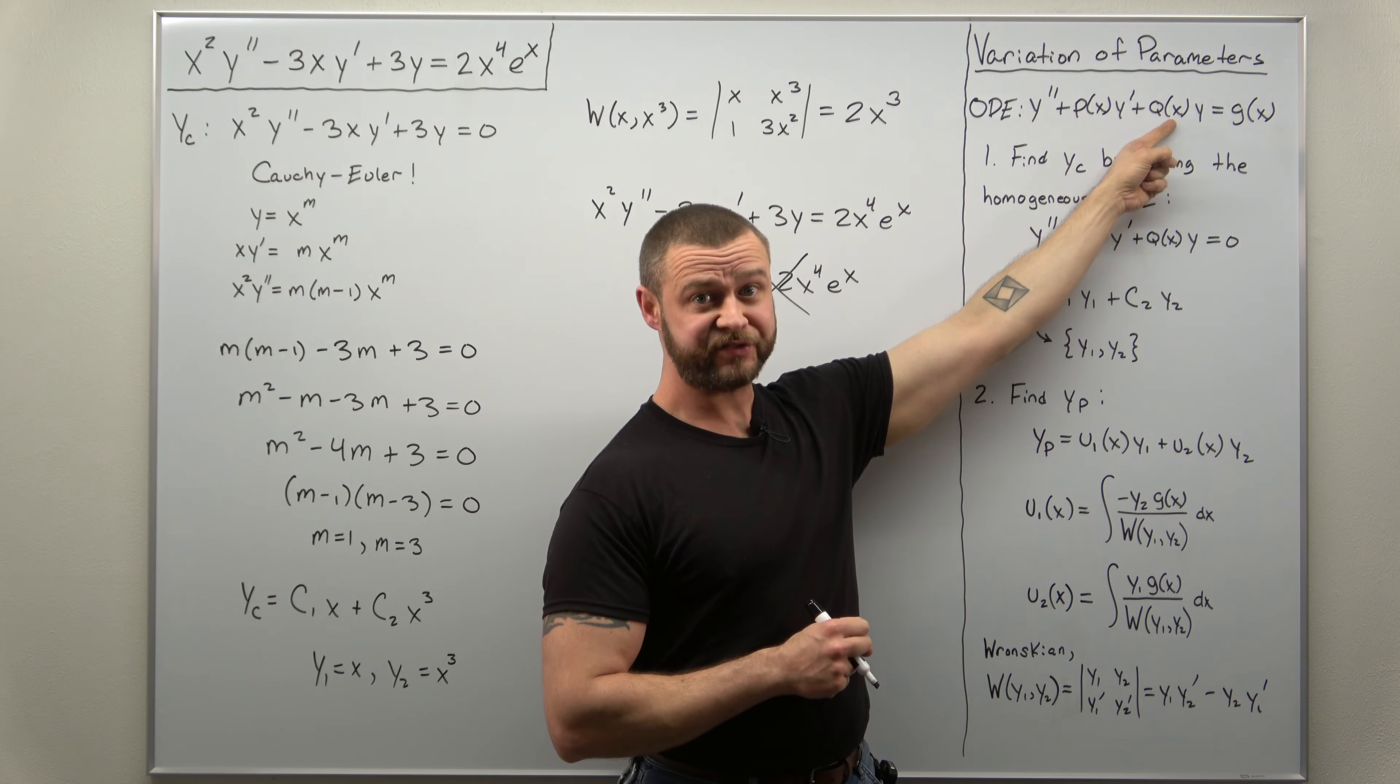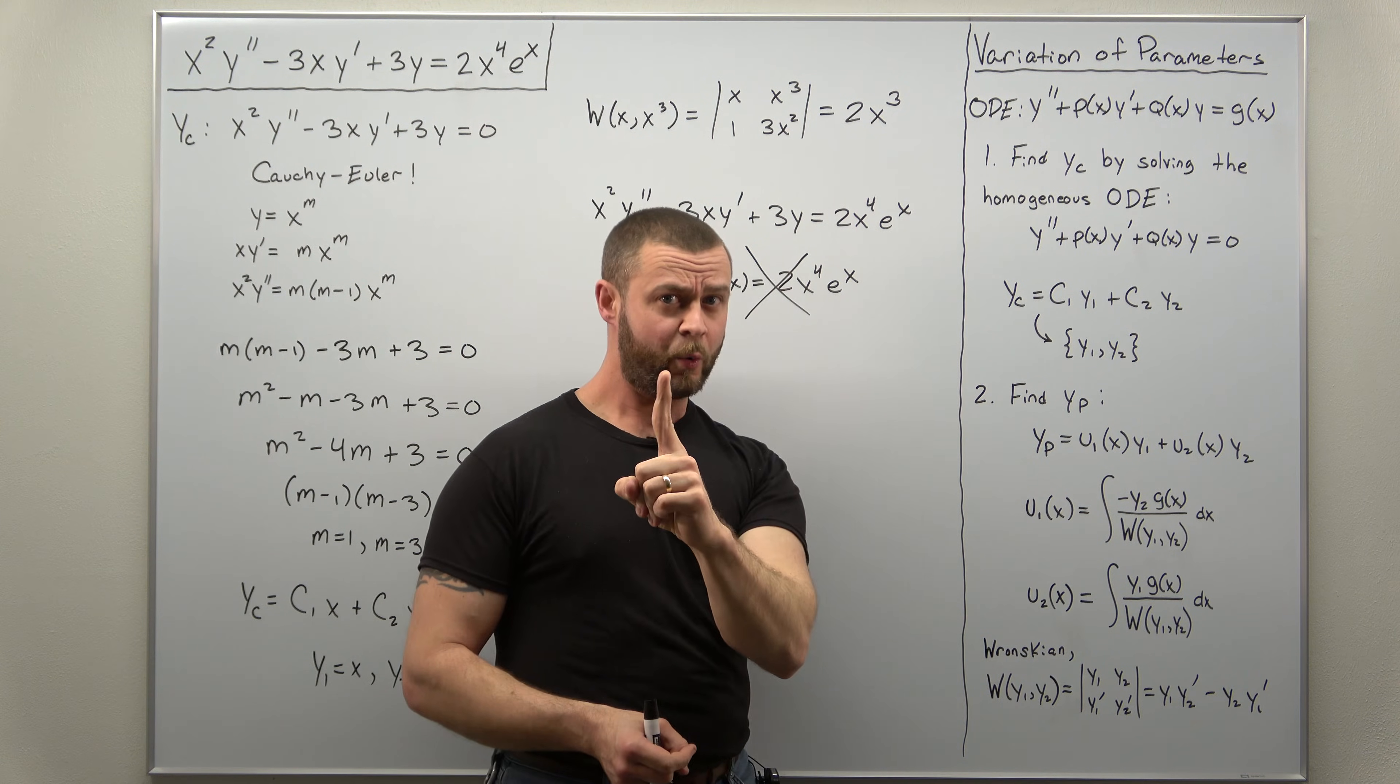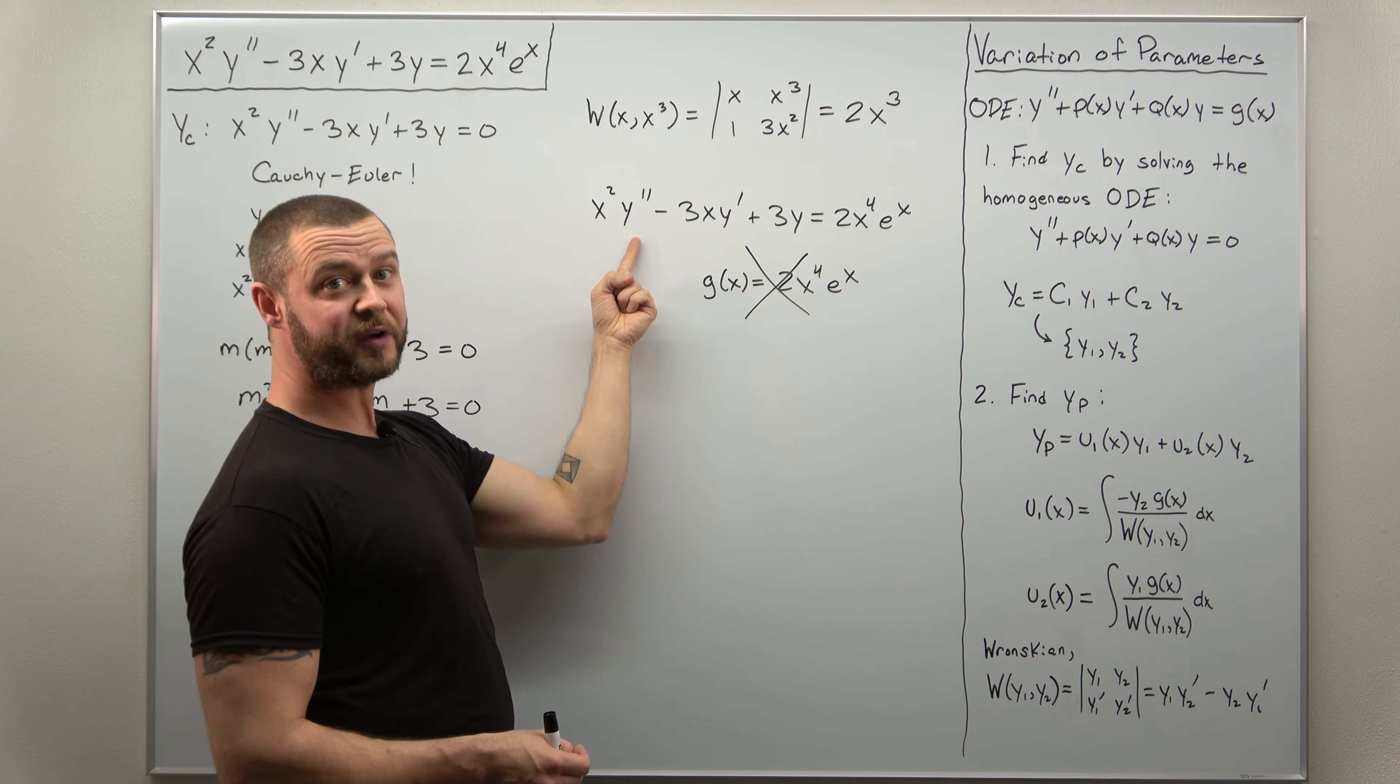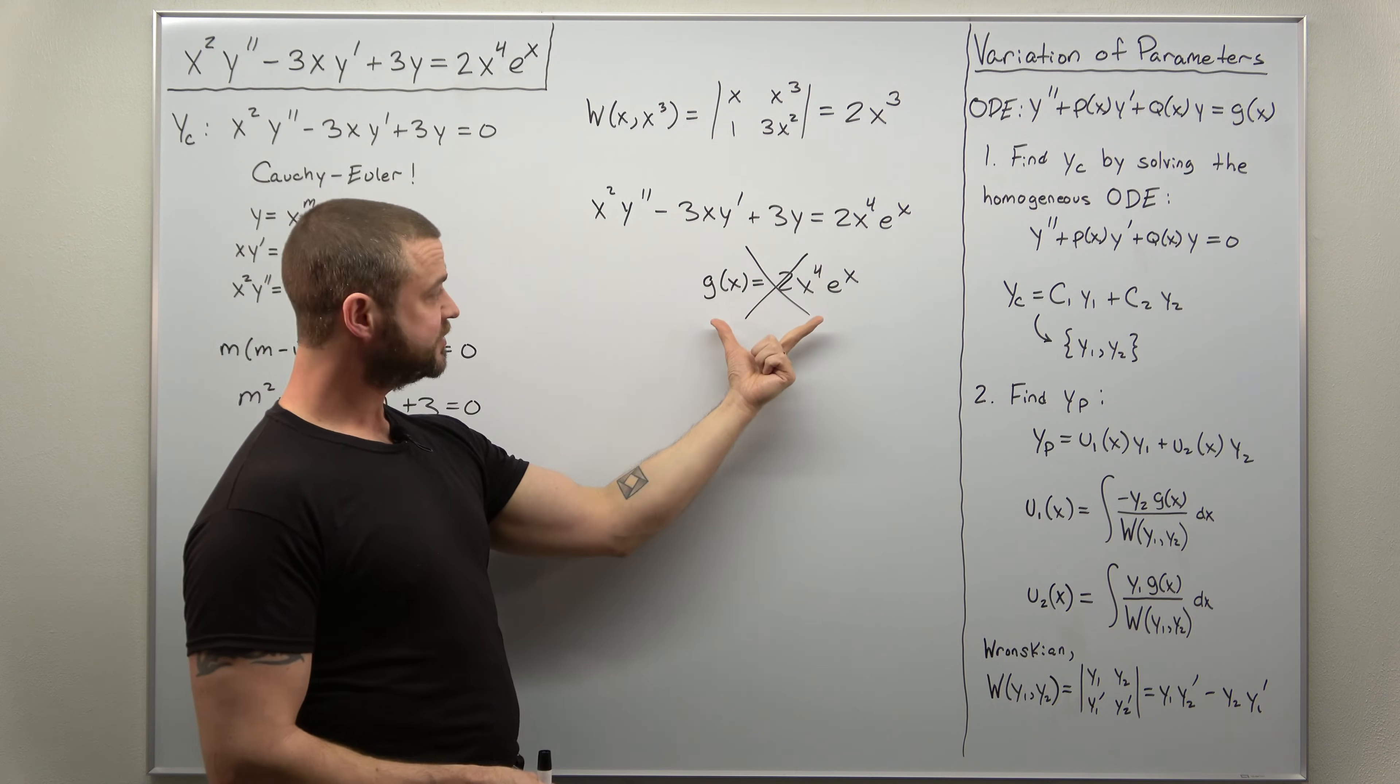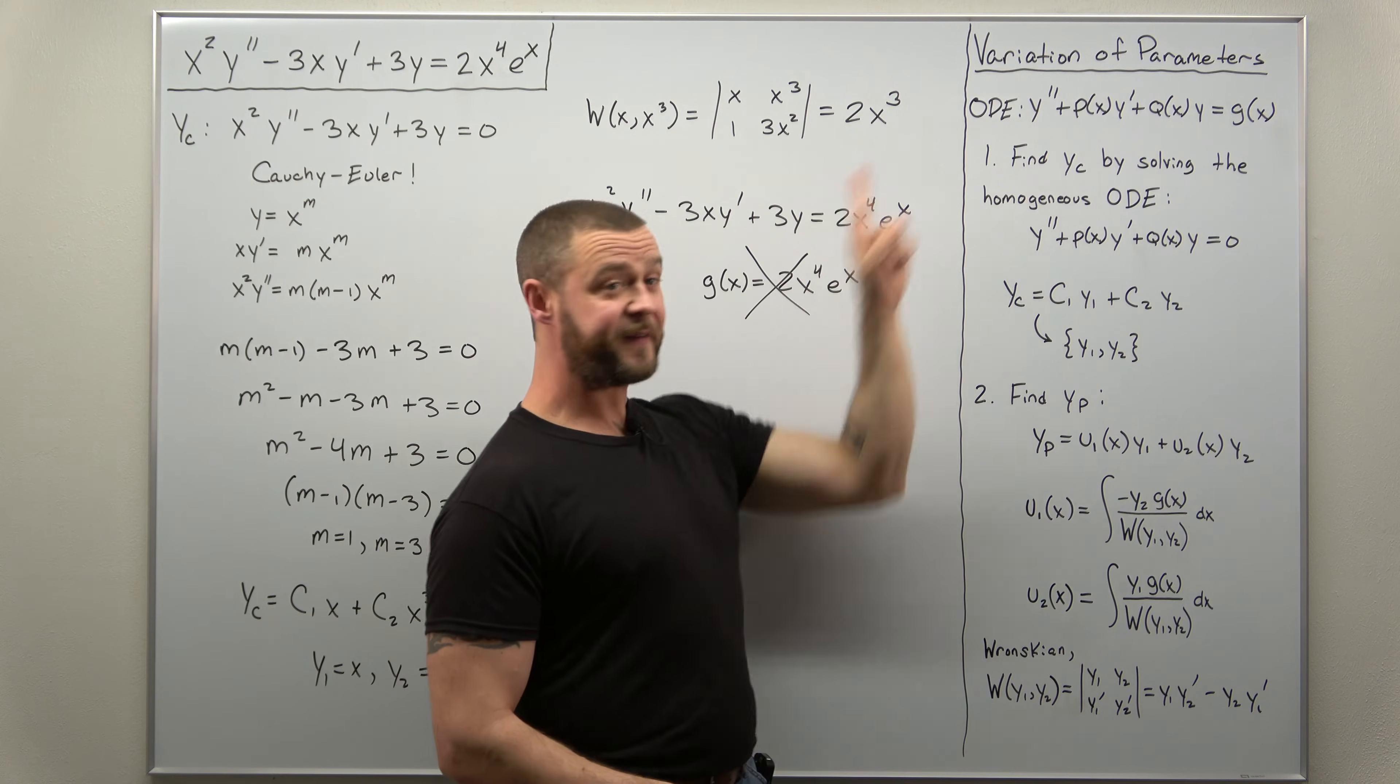Y has a non-constant coefficient, a function. Y prime also has a non-constant coefficient, another function. But what's your coefficient of Y double prime here? 1. So in order to properly identify G of X, you need to make sure in front of your second derivative term, Y double prime, there's a 1. And you can see here, there is not. There's an X squared in front of that second derivative. So G of X is not 2X to the 4th times E to the X because this non-homogeneous ODE is not in that form where in front of the second derivative term, there's a factor of 1.